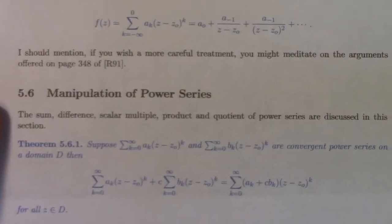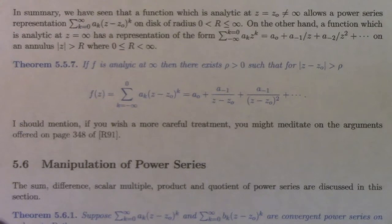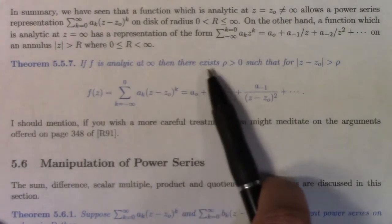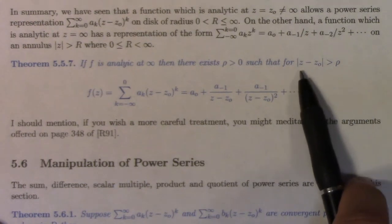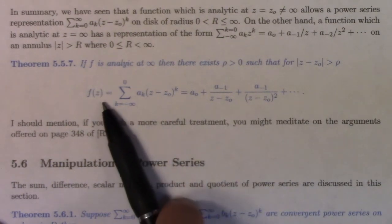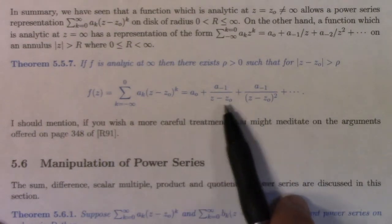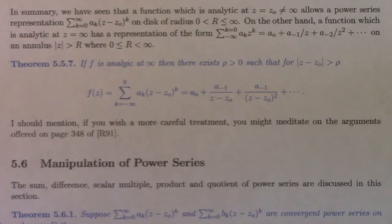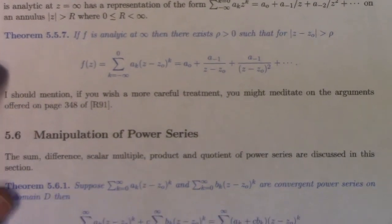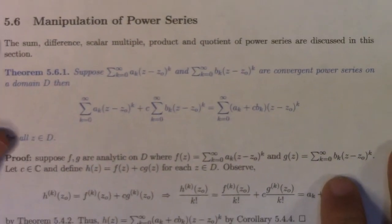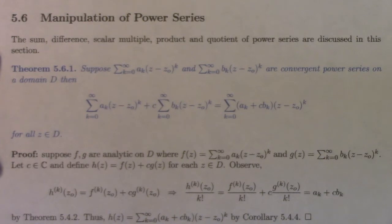There's a theorem: if f is analytic at infinity, then there exists a rho greater than zero such that if you're exterior to the disk centered at z0, the formula for the function can be expressed in terms of negative powers of z minus z0. That's all I have to say about analytic at infinity for now. Work a homework problem or two and hopefully it'll make more sense. The next section is on the manipulation of power series, which I should spend a couple minutes on because the arguments are simple and you shouldn't be deprived of them.